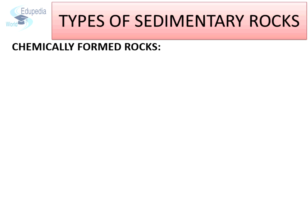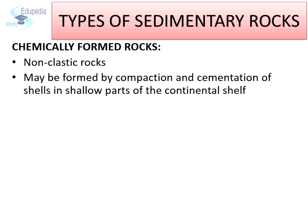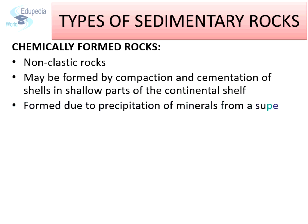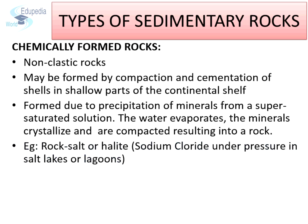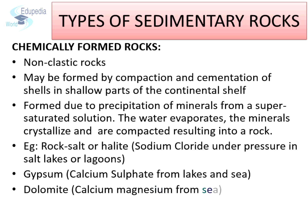Chemically formed sedimentary rocks are also called non-clastic rocks. These rocks may be formed by compaction and cementation of shells in shallow parts of the continental shelf, or they may also be formed due to precipitation of minerals from a supersaturated solution. The water evaporates, the minerals crystallize and are compacted, resulting in a rock. Examples are rock salt or halite, gypsum, and dolomite.